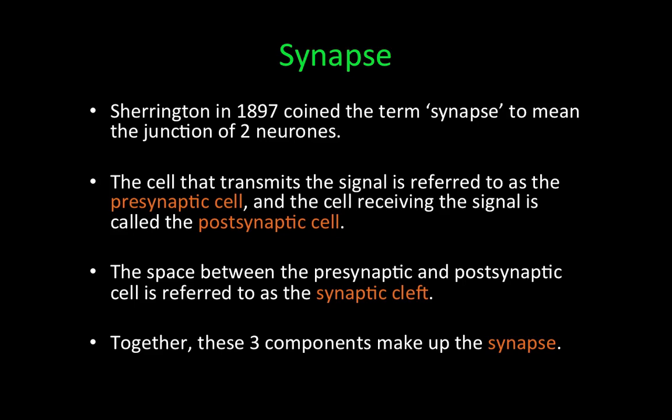Together, these three components — the presynaptic cell, postsynaptic cell, and synaptic cleft — make up the synapse. The presynaptic cell and the postsynaptic cell don't make physical contact with each other; there's a small space between the two of them, and we call that space the synaptic cleft. It's on average about 50 nanometers apart.